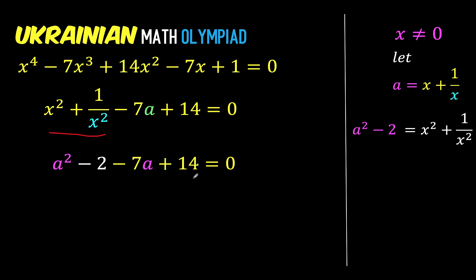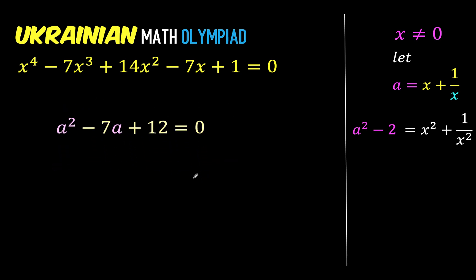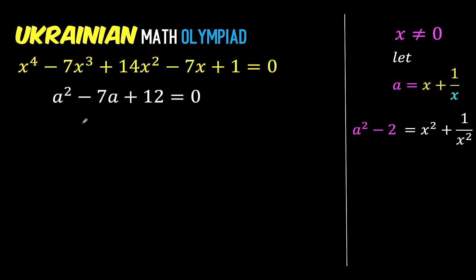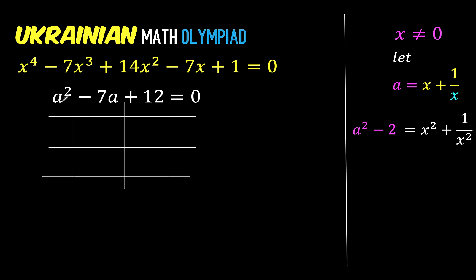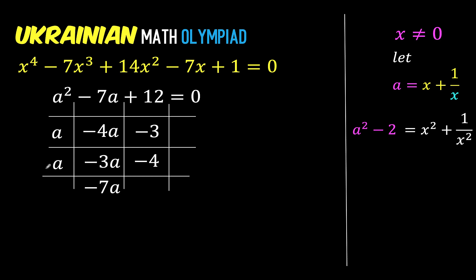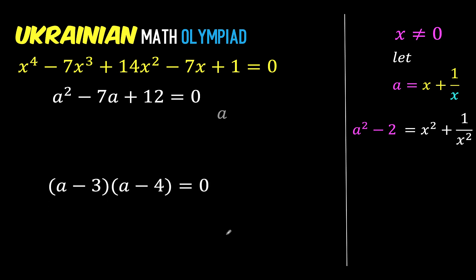We now have a quadratic equation that can be solved by factoring. Using the tic-tac-toe method, the factors of a squared are a times a. The factors of 12 that result in negative 7 when added are negative 3 and negative 4. To check: a times negative 4 gives negative 4a, a times negative 3 gives negative 3a, and negative 4a plus negative 3a is negative 7a, which matches the middle term.